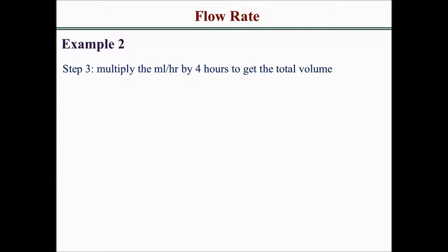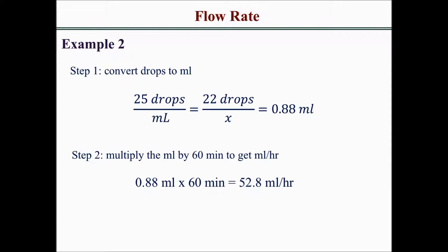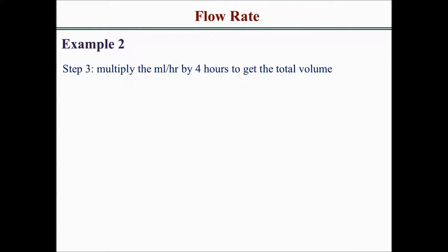Now that you know the patient is receiving 52.8 mLs per hour, and the patient is receiving that for 4 hours, you multiply that number by 4 hours to find the total volume the patient is getting over 4 hours, which is 211.2 mLs.